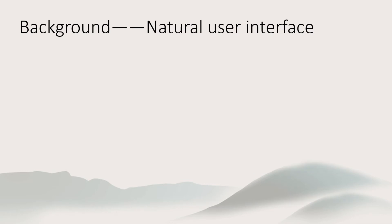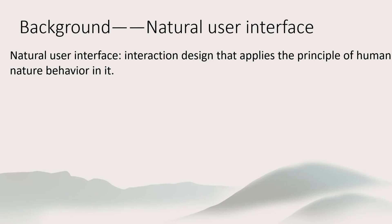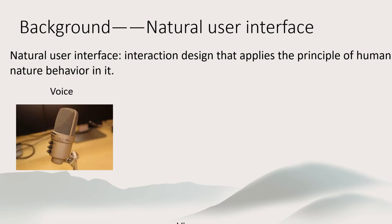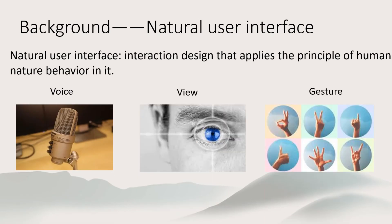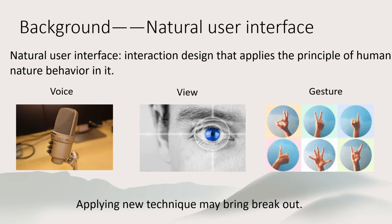To improve the design of a cultural heritage game, a designer may need to offer a totally new method of interaction to players. A natural user interface can be such a new method. It refers to interaction design that applies the principles of human natural behavior. Voice, eye-tracking, and gesture — all of these can be a natural user interface. Applying it may bring breakthroughs to cultural heritage games.